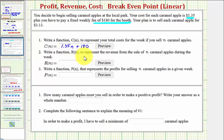Next, we want to find the revenue function. Again, where n is the number of apples sold per week. We'll notice how the plan is to sell the apples for $3.13 each.